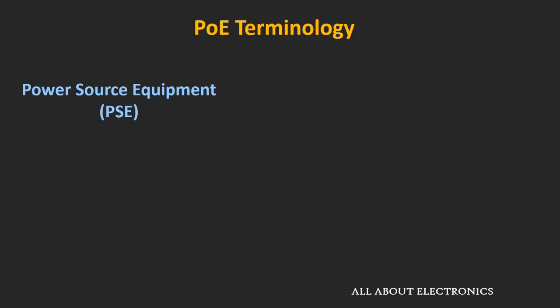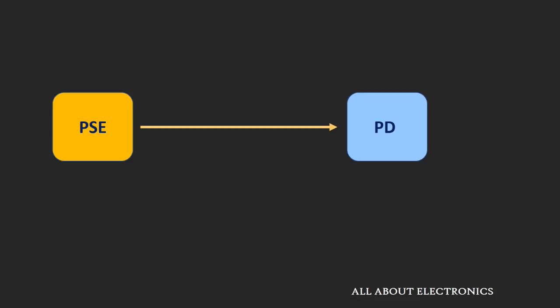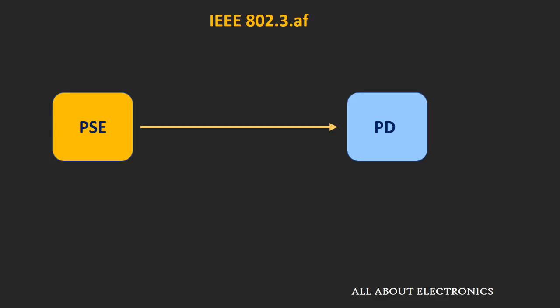The equipment which supplies the power to the network devices is known as the Power Source Equipment or PSE. The network devices which receive the power over the Ethernet cables are known as Powered Devices. Now, before supplying the power to these network devices, the first thing that the PSE checks is whether these devices are PoE enabled or not. To check that, the PSE sends signals in the form of voltage to these powered devices, and in response, it receives the signature of these powered devices, which is the resistance across them.